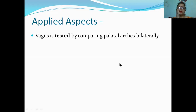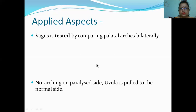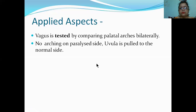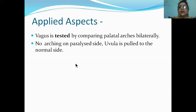If the right side of the vagus is damaged, the arch will be defective on that side. The normal side will be pulling the uvula. There is no arching on the paralyzed side, and the uvula will be pulled towards the normal side.